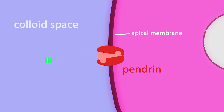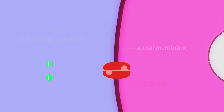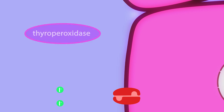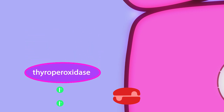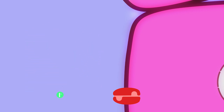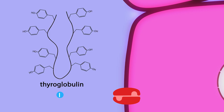Pendrin transports one iodide ion into the colloid space in exchange for one chloride, though the precise stoichiometry remains unclear. Once inside the colloid space, the enzyme thyroperoxidase oxidizes two iodide ions to form one iodine molecule. Next, the peroxidase iodonates the tyrosyl residues of the thyroglobulin protein. Iodinating a single tyrosyl residue forms monoiodotyrosine, while iodinating two tyrosyl residues forms diiodotyrosine.